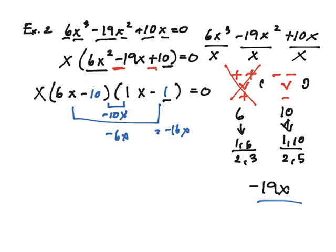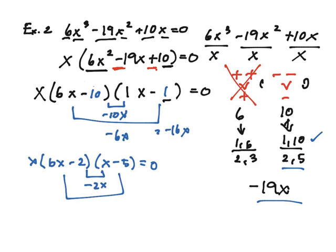So, we've done this. Let's go ahead and try 2 and 5. So, x and then 6x minus 2 and x minus 5. So, we have negative 2x, and then negative 30x. Once again, too big. Not going to work.